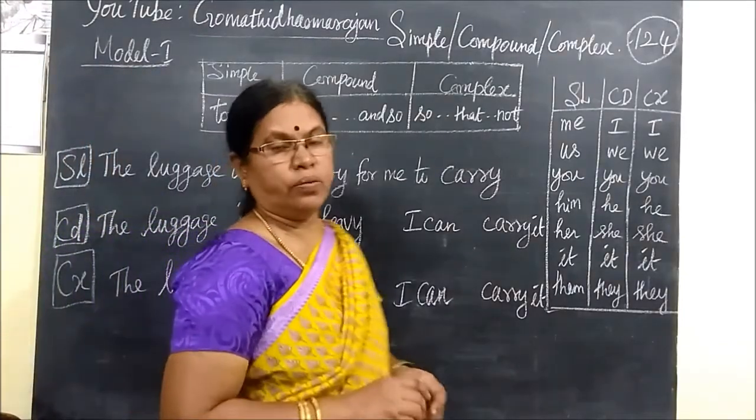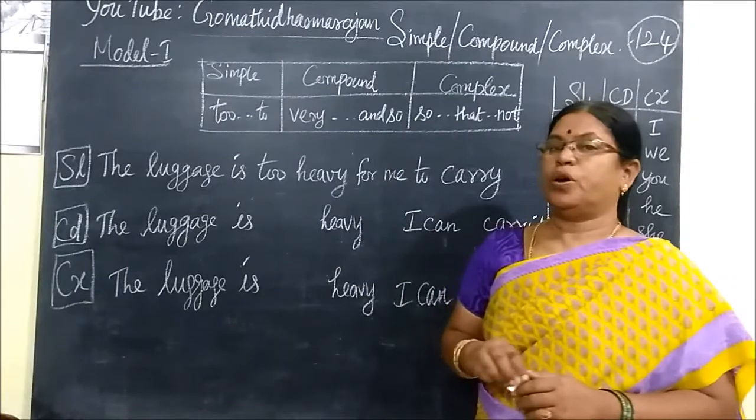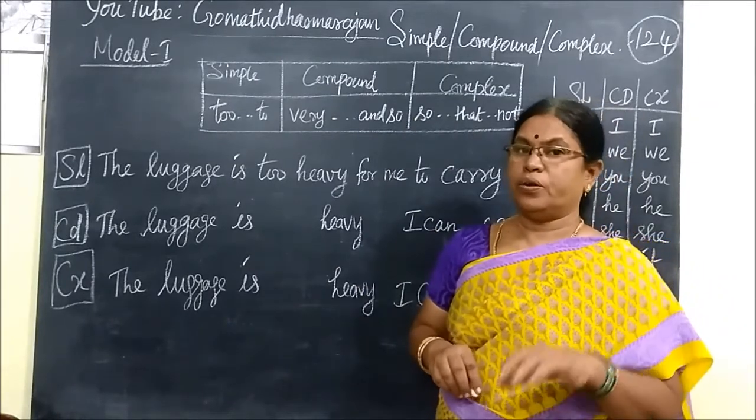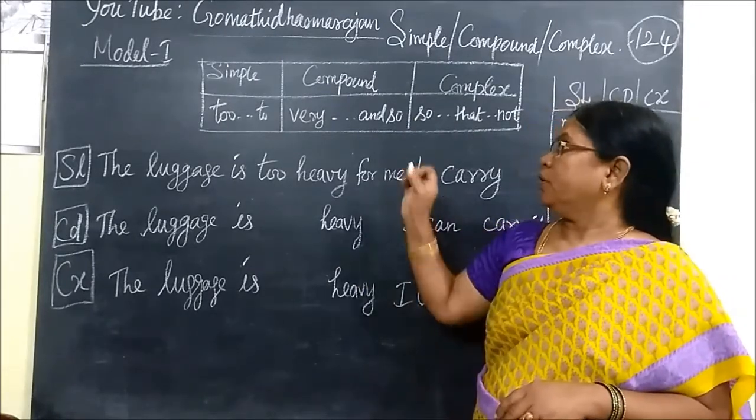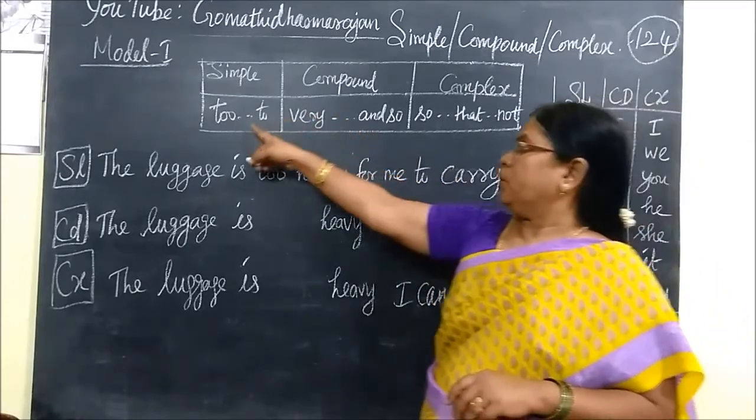So now we see path 124, the same simple compound complex. Path 123 is the introduction path. Now, model 1, the model 1 is simple 2, the 2 is the adjective.